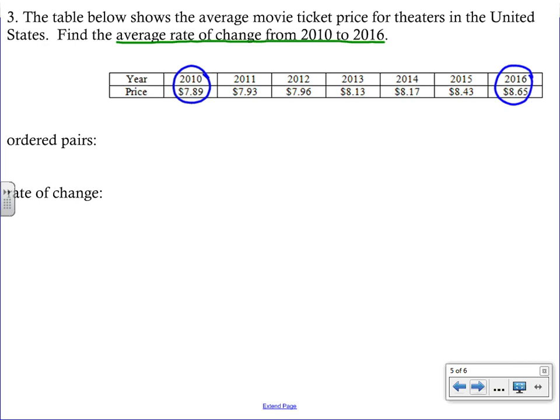So we're going to circle the price in 2010 and 2016. And then those are the only points that I'm really going to be concerned about. When information is set up in a table, the top is usually the independent. And again, time or the year is usually going to be your independent. So that's going to be our X. And then the price, how much a movie costs is going to depend on what year it is. So if we form our ordered pairs, our first one is going to be 2010 and then 789. And our second one is going to be 2016 and then 865.